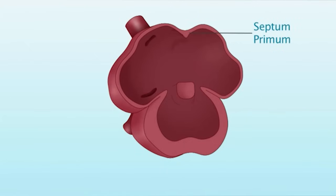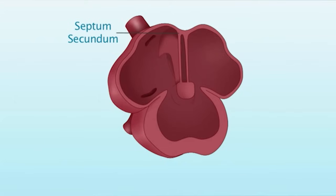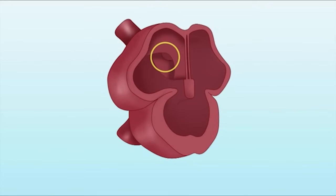Septum primum grows downward between the right and left atrium and eventually fuses with the endocardial tissues. The septum secundum grows parallel to the septum primum. Both septum primum and septum secundum develop with holes in them to create a passageway for blood to flow from right atrium to left atrium through the foramen ovale.